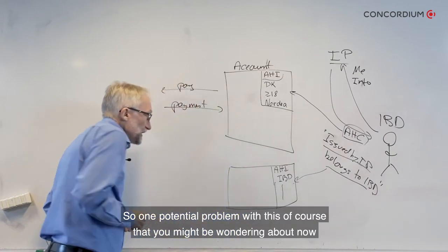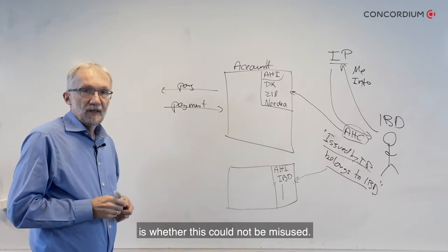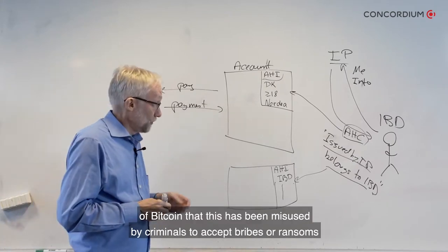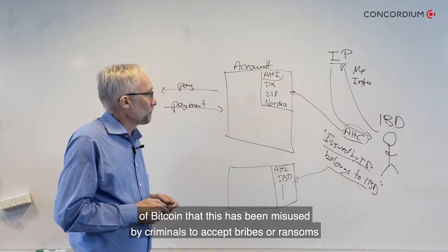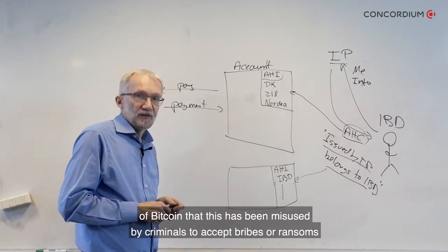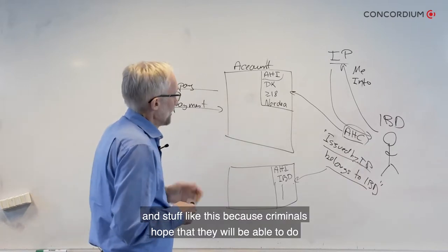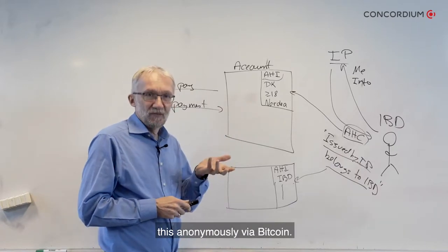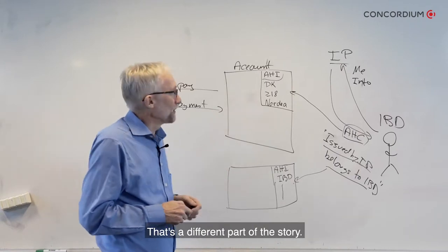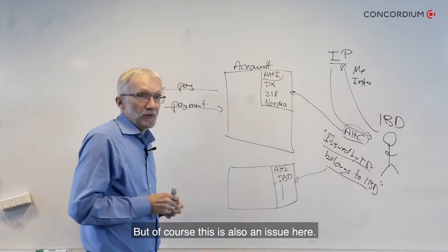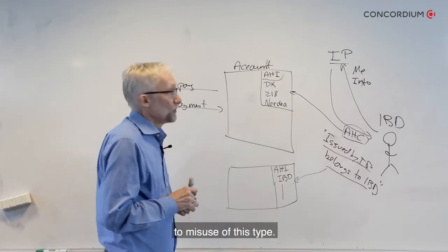One potential problem you might wonder about is whether this cannot be misused. It's well known that in the world of Bitcoin, this has been misused by criminals to accept bribes or ransoms, because criminals hope they can do this anonymously. Bitcoin isn't really that anonymous after all — but of course this is also an issue here, and if there were nothing else in the system, it would indeed be open to this type of misuse.